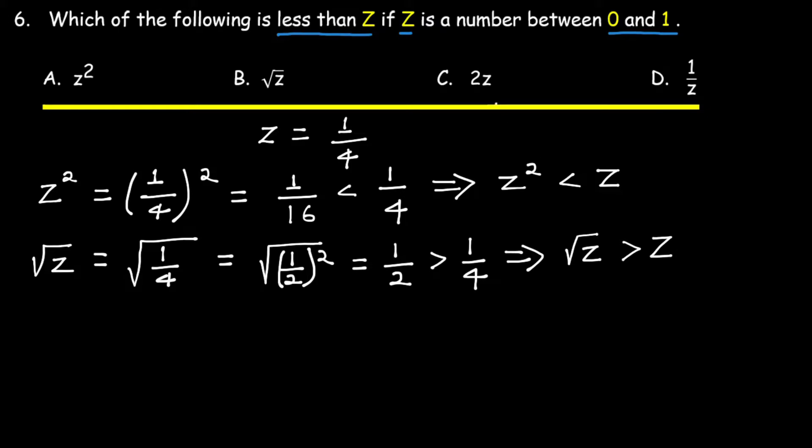Next, 2z. For 2z, it's 2 times 1/4, which equals 1/2, which is greater than 1/4. So 2z is greater than z.